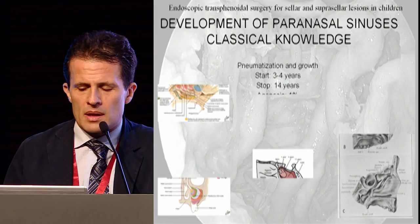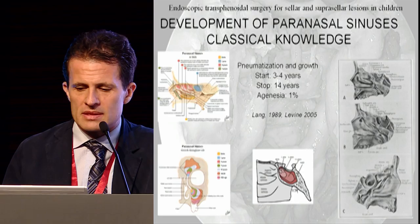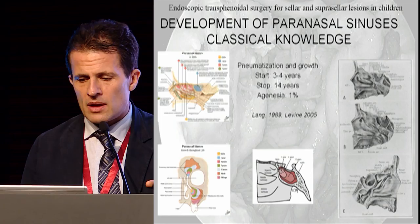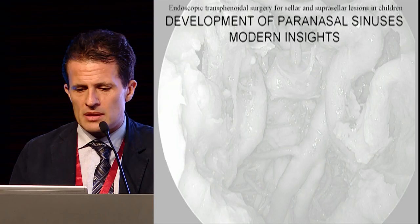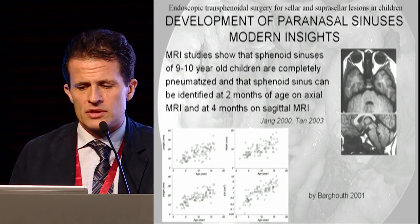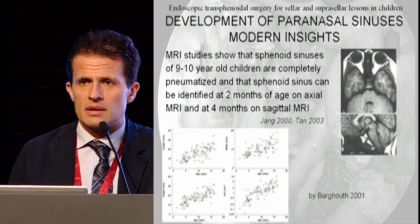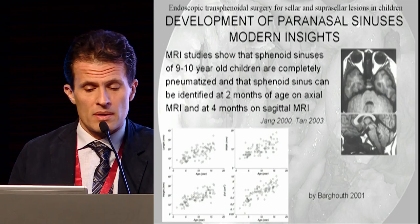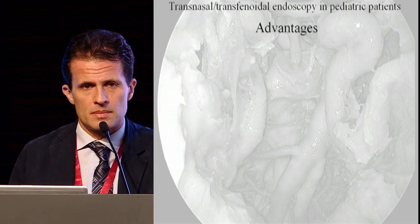What is classically known about the sphenoid sinus is that pneumatization starts at 3–4 years, stops at 14 years, and is agenetic in 1% of cases. But there are more modern insights: from MRI studies, 9–10 year old children may have a completely pneumatized sinus already, and the sinus can be identified as early as 2 months of age on axial MRI or 4 months on sagittal MRI.